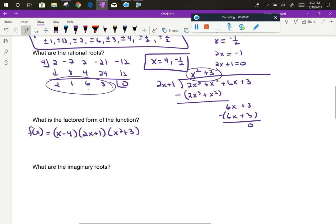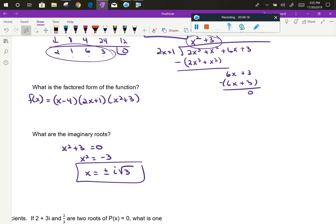I can find the imaginary roots from that leftover factor that couldn't be factored any further using the zero product property and solving by taking square roots. Notice when I take square roots this time, I get plus or minus i root 3 because when I take the square root of both sides, I'm going to generate an imaginary number.